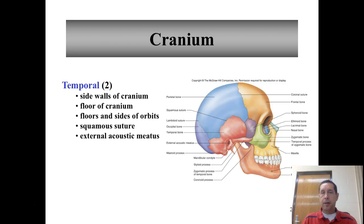The temporal bones are on each side of the skull — there's a right and a left. They make the sidewalls of the cranium, the floor of the cranium, and the floor and sides of the orbits. They contain the external acoustic meatus, which is the opening or pathway through the bone where the ear canal is located. They're connected to the parietal bones through the squamous suture.